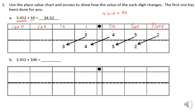The place value to the right is one-tenth the value of the place value to the left. To model 3 and 452 thousandths times ten, we shift each digit one place value: the 2 in the thousandths moved to the hundredths, the 5 in the hundredths moved to the tenths, the 4 in the tenths moved to the ones, and the 3 in the ones moved to the tens — giving us 34 and 52 hundredths.